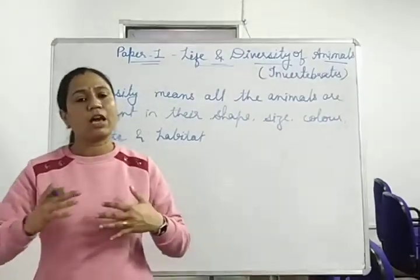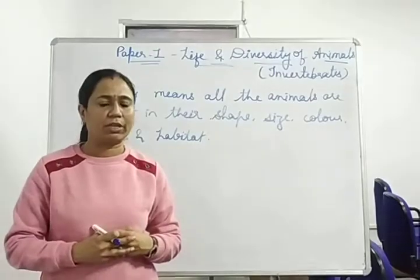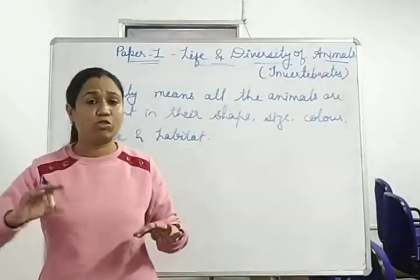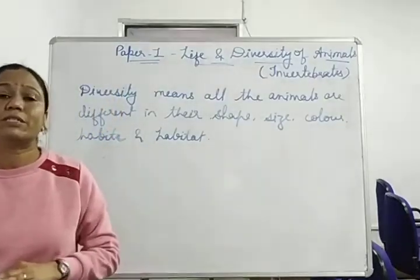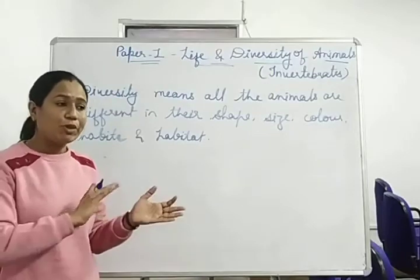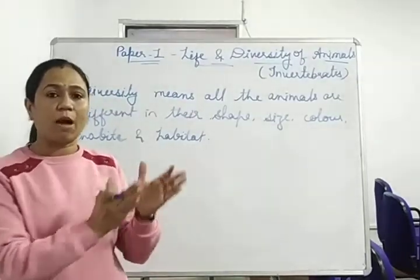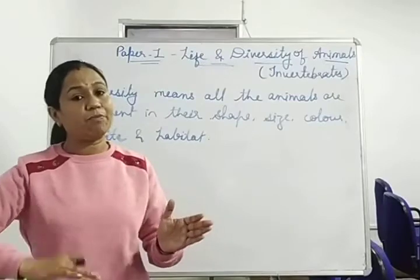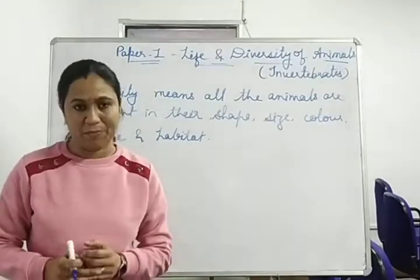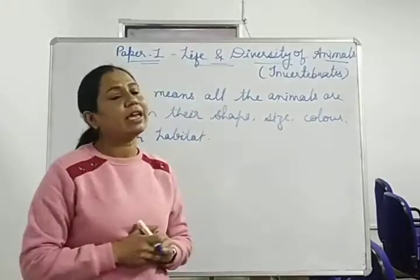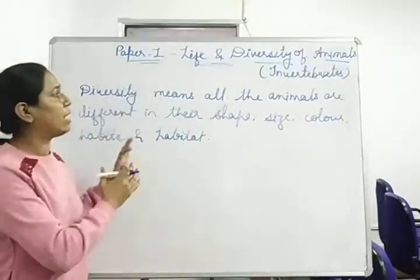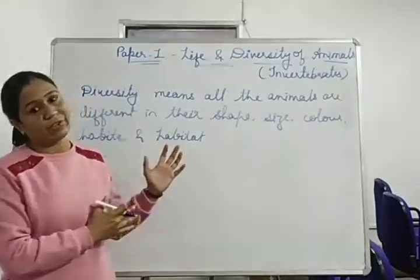What did animals do? That means, where animals came from the water, all animals can be modified according to the land. So what did animals do — to keep competition, to improve survival — because animals have diversity.